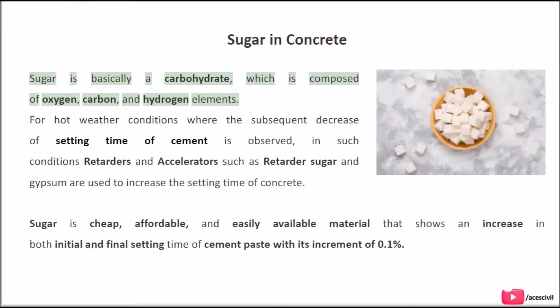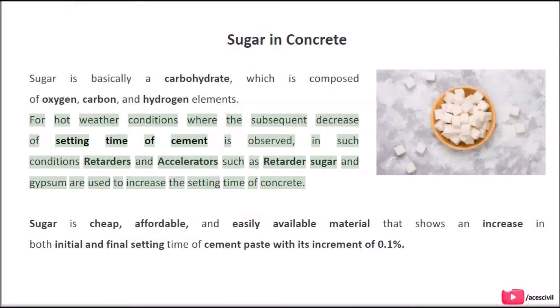Sugar is basically a carbohydrate which is composed of oxygen, carbon, and hydrogen elements. For hot weather conditions where the subsequent decrease in setting time of cement is observed, retarders and accelerators such as retarder sugar and gypsum are used to increase the setting time of concrete.